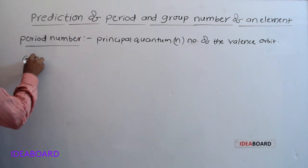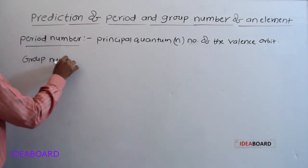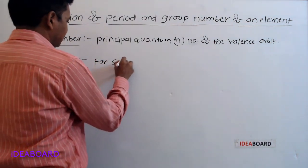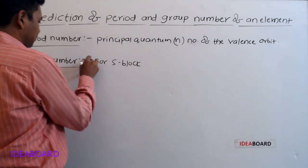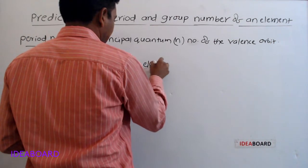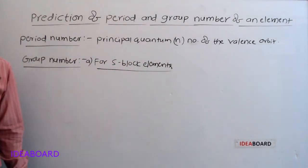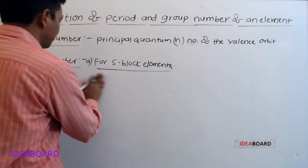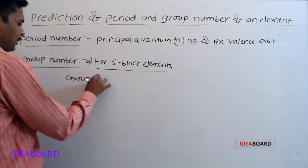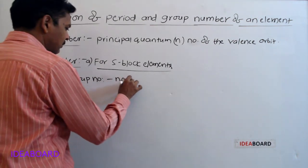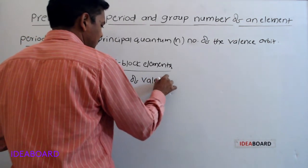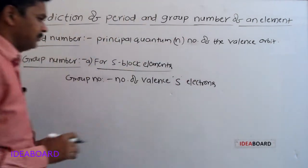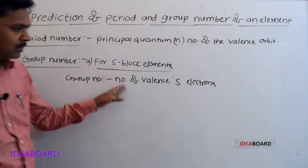Next, group number. For s block elements, group number is equal to the number of valence s electrons.